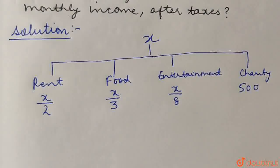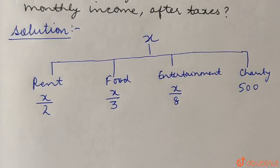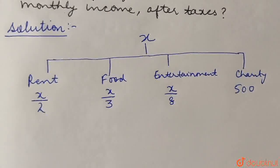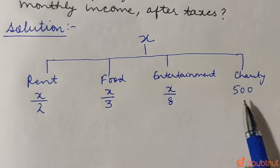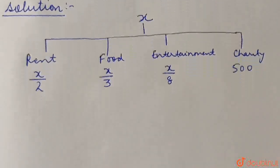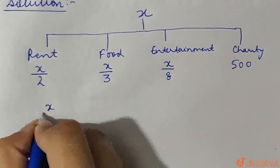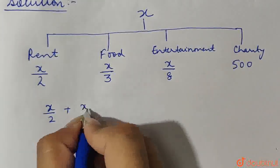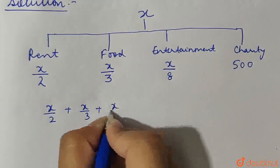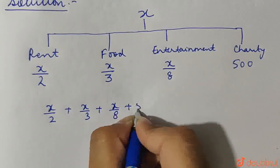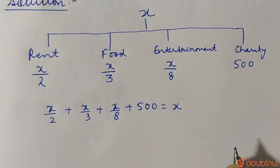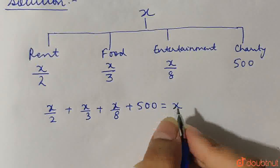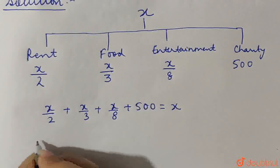So this is the breakup of his monthly income where he is spending. All these quantities must add up to X. That means X by 2 plus X by 3 plus X by 8 plus 500 must give us X. That is his total income. So we can simplify.